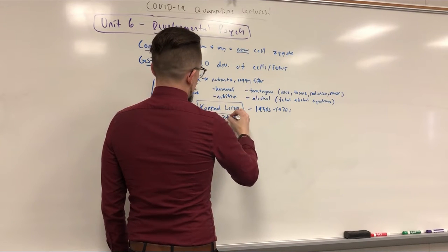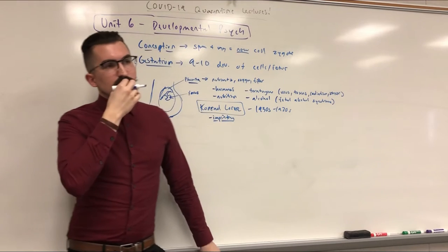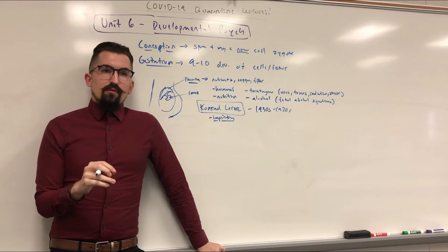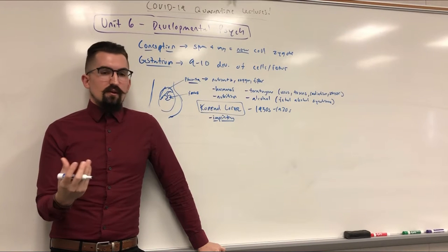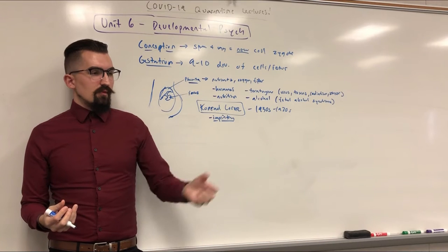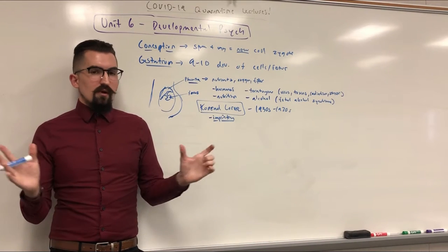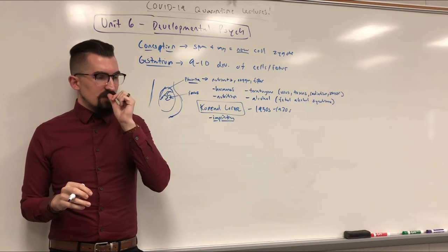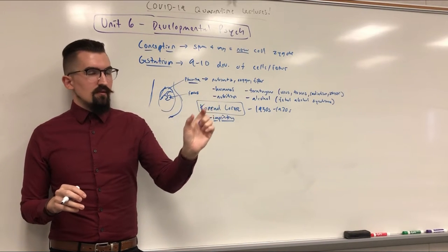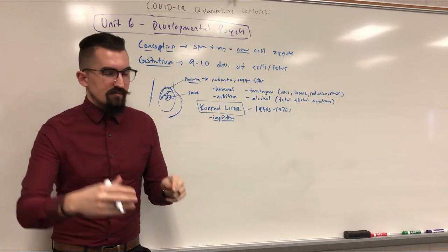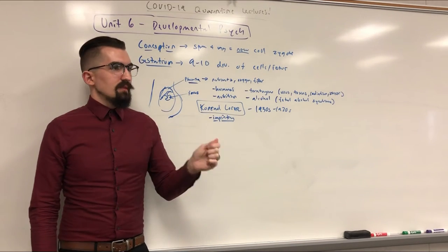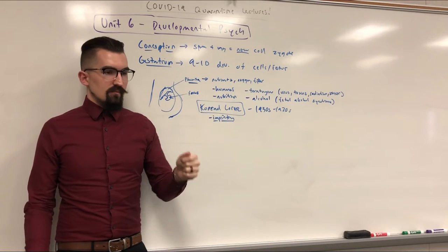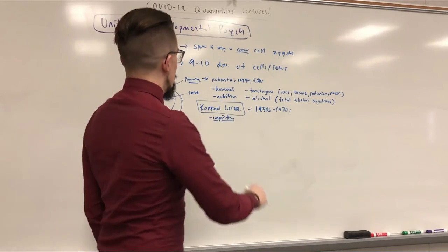Conrad Lorenz studied and did a lot of work on imprinting. In geese, for example, there's a time period where if you take a fresh hatchling and pair it with a mother, it will fairly quickly imprint on what it believes to be its mother. It will form this really close connection and think that whatever this thing is is its mother, and will follow it until it reaches its next developmental milestone where it starts to go off on its own. That powerful connection where they identify with it as mother and follow it no matter where it goes — that's imprinting.